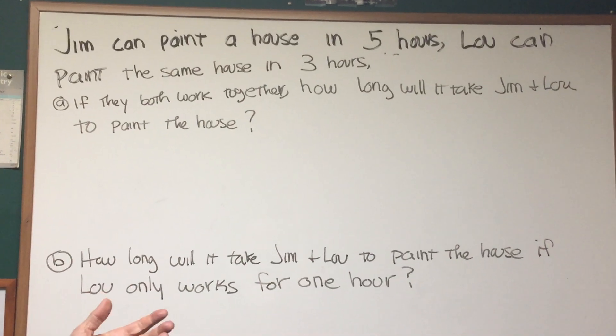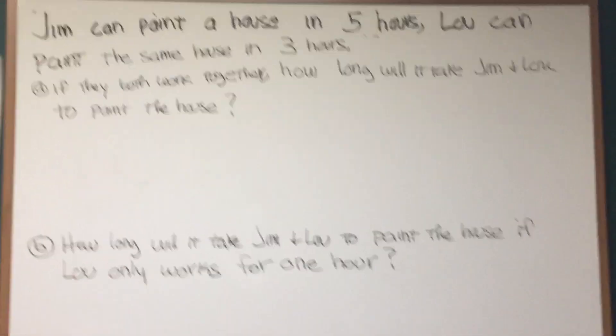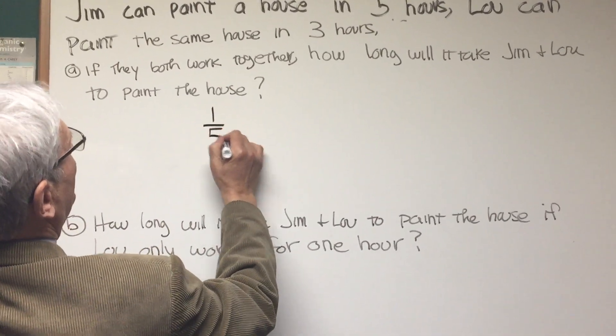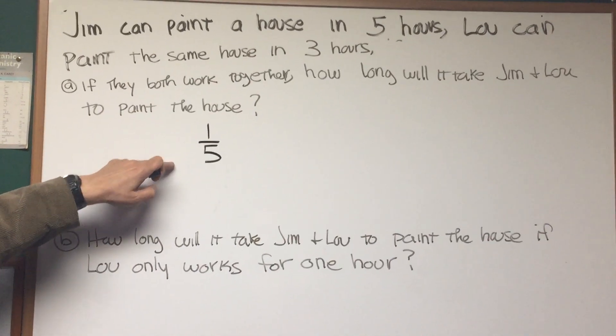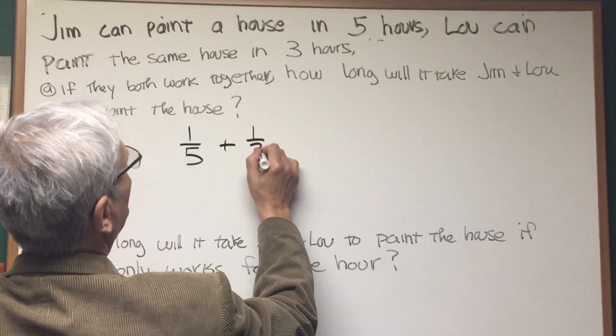Combined work problem, what we're going to do is add the rates at which both Jim and Lou are working. Jim can paint a house in five hours, so that means his rate is one house in five hours. We're going to add that to Lou's rate, one house in three hours.